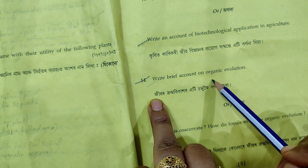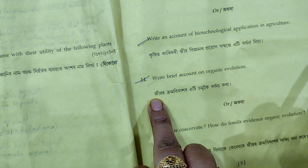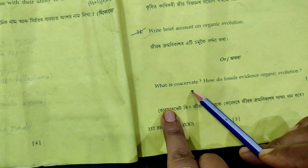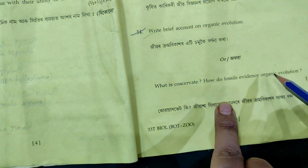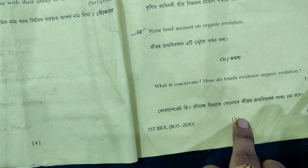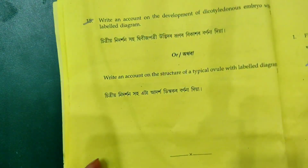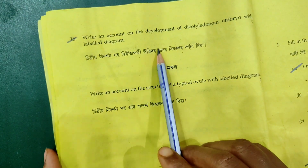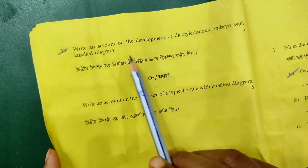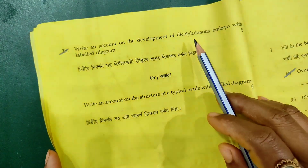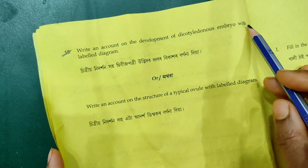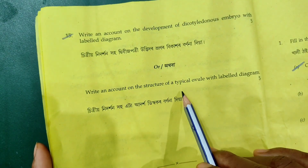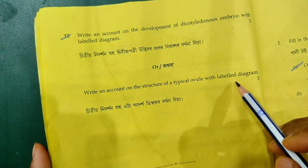Next: write a brief account of organic evolution — this is four marks. Next: write an account on the development of dicotyledonous embryo with a labelled diagram. Next: write an account of the structure of a typical ovule with a labelled diagram.